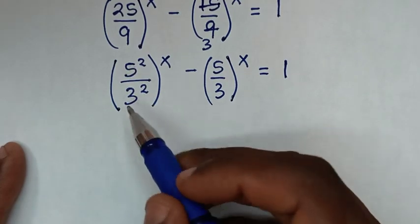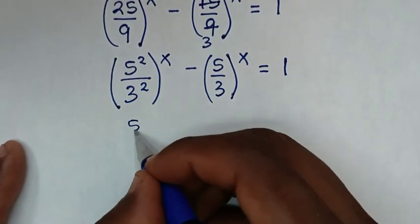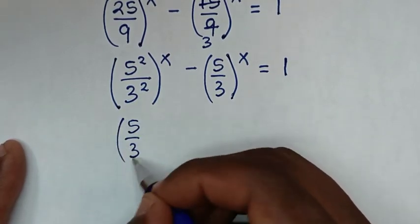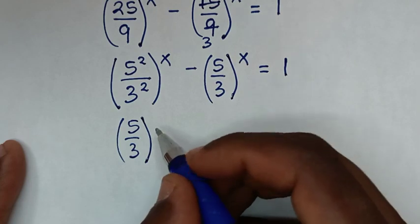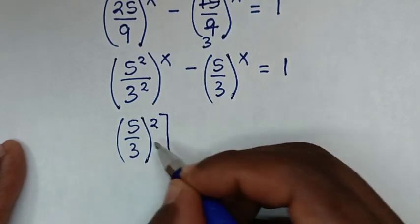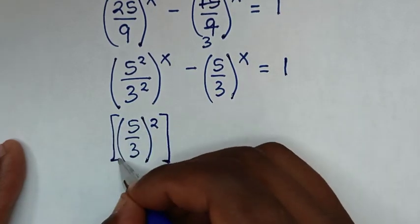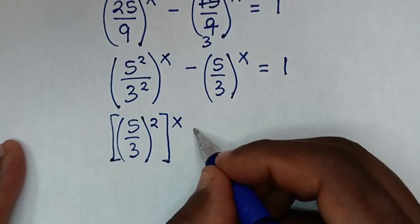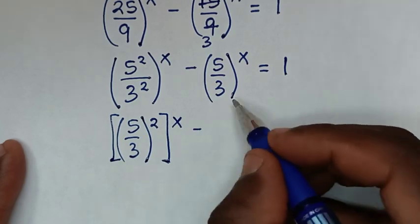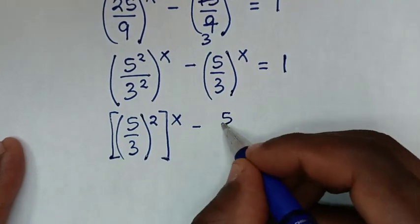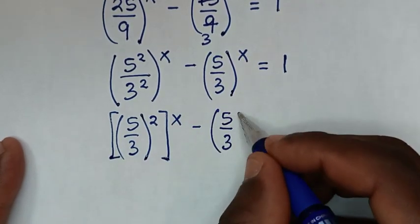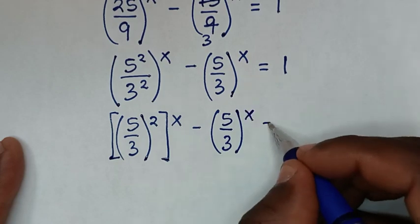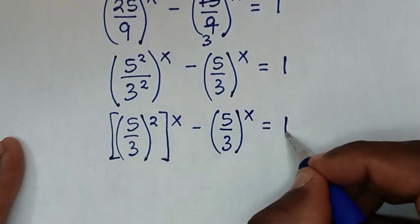Since the power of 2 is common inside, this becomes (5/3)^(2x) minus (5/3)^x is equal to 1.